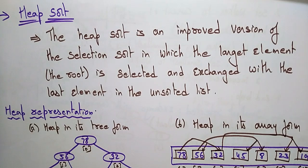Hi students, welcome back. Coming to the next topic, that is heap sort. The classical selection sort is of two types: one is the straight selection sort and the next is the heap sort. In the previous video, I explained about the straight selection sort with an algorithm. Now let us see the heap sort.